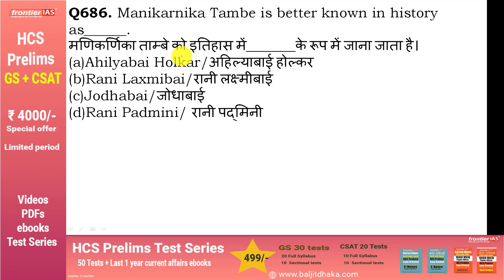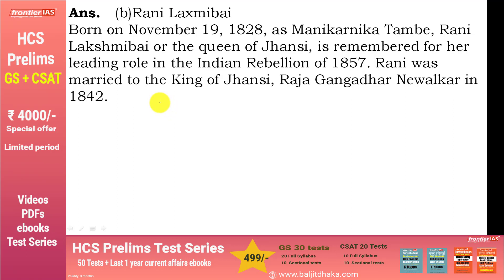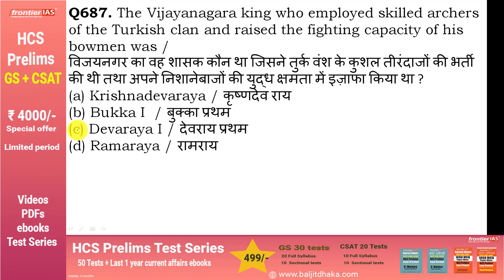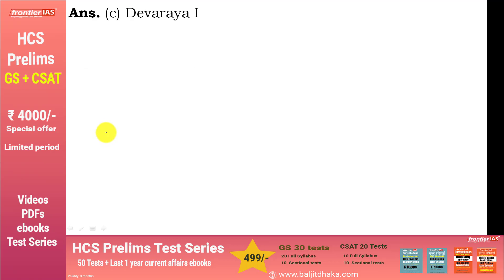Manikarnika — Rani Lakshmi Bai — इतिहास में किस रूप में जानी जाती है: Queen of Jhansi. The Vijayanagara king who employed skilled archers of the Turkish clan and raised the fighting capacity of bowmen was — Devraj I.